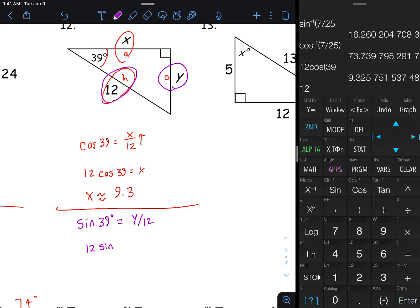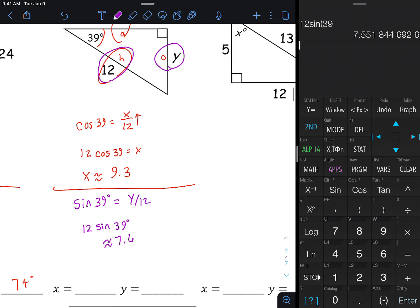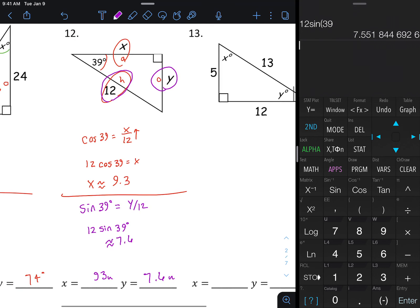It's 12 sine 39 degrees. I didn't type it in right, 12 sine 39, so that's roughly 7.6 after you round right there, and then whatever units you are given right there.